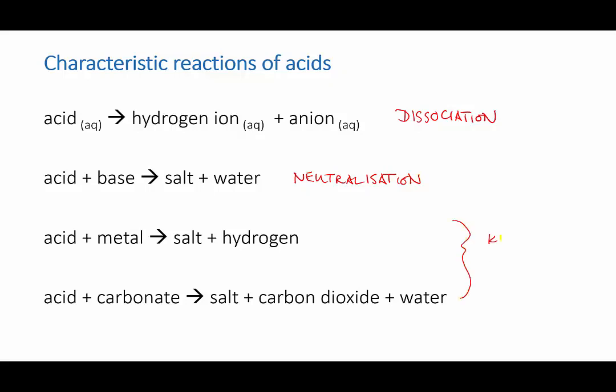The next two reactions are kinds of corrosion. When an acid reacts with a metal, the metal is eaten away and the products are a salt and hydrogen gas. When an acid reacts with a carbonate, the carbonate is eaten away and a salt, carbon dioxide gas, and water are produced.